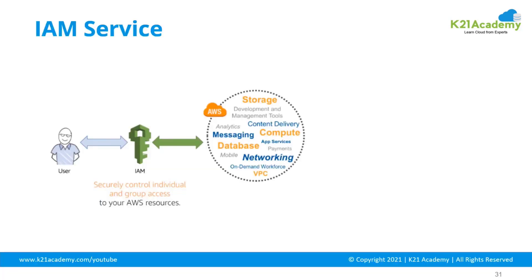So what is IAM service? It's a security control for individuals or a group of users to access all your AWS resources — be it storage, networking, your databases, Linux virtual machines, application services — everything you are doing in the AWS cloud. How you access that is about Identity and Access Management.